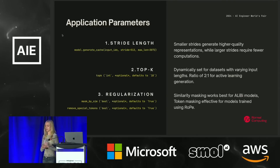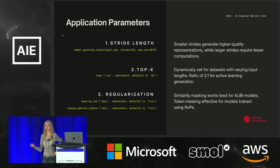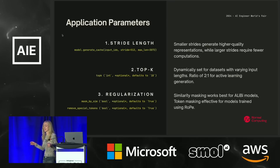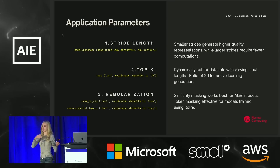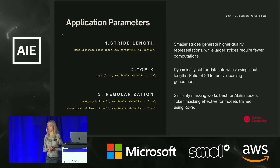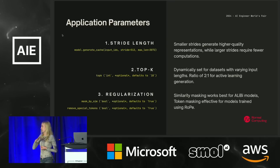Now I'll tell you about the most important parameters to set when using extended mind transformers. You may have heard of stride length — this is a parameter that comes up a lot even in regular perplexity computations. When we compute the memories we're going to attend to, we pass them through the model and save off these key-value representations. The models we're using are trained on a fixed context length, so we need to pass over them with some stride such that each token has an appropriate amount of context to generate the representation. A smaller stride gives you more high-quality representations but requires more computation. There are graphs in the paper that represent this trade-off.